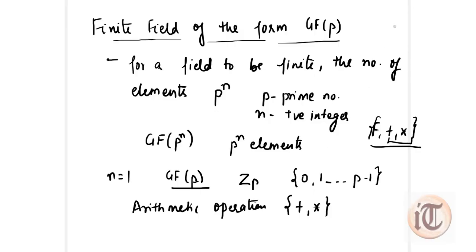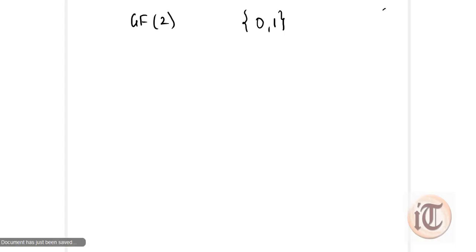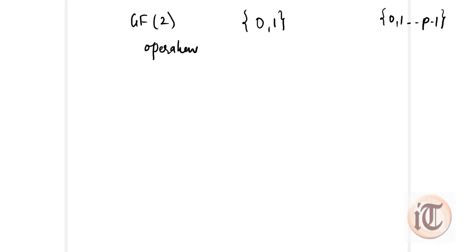We take an example to show how we calculate a Galois field. A very common example is GF(2). This means the elements form a set of 0 and 1, because we represent elements as 0, 1 up to P minus 1, and here P is 2. So the set is {0, 1} and the two operations are plus and star.